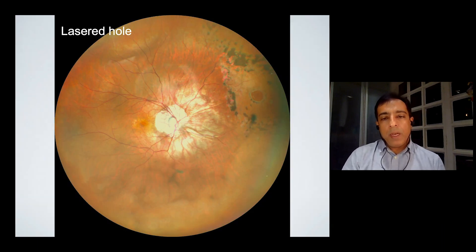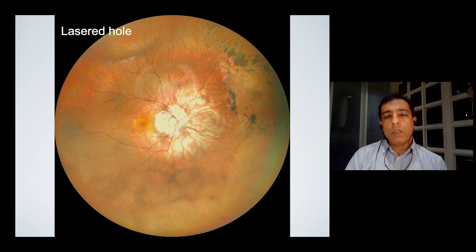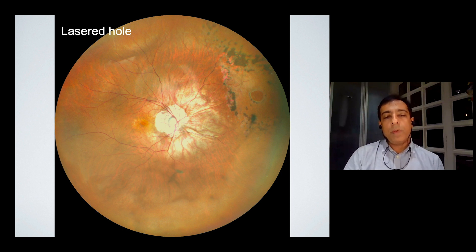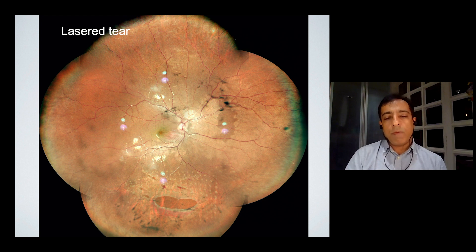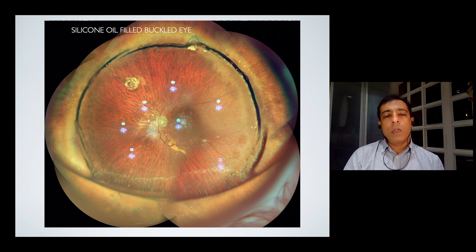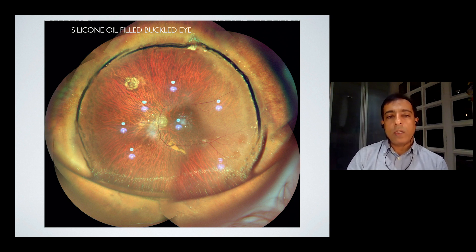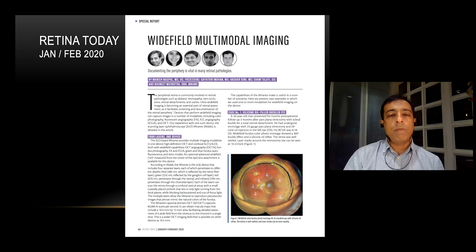This is a patient who had a pigmented, lasered hole which had come for follow-up. You can see in the extreme right there is a hole with laser pigment around it and the lesion is well regressed. This is another patient with a tear inferiorly which we have lasered and documented the extent so that we can follow it up for any new lesions in the future. This is a silicone oil-filled eye that also had a retinal buckle, and Mirante works very well with the silicone oil, giving us a very natural view of the retina. You see the laser marks, the well-attached retina, and the margin of the oil in relation to the buckle — beautifully capturing the details with almost natural colors. We published this in Retina Today in the Jan-Feb edition.